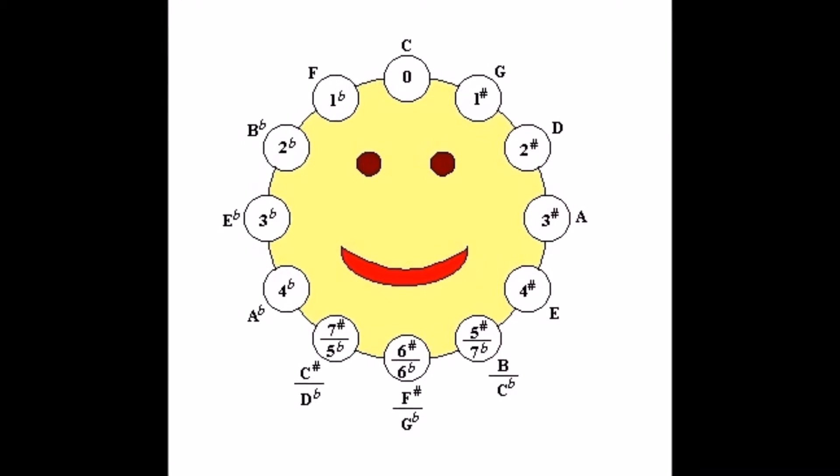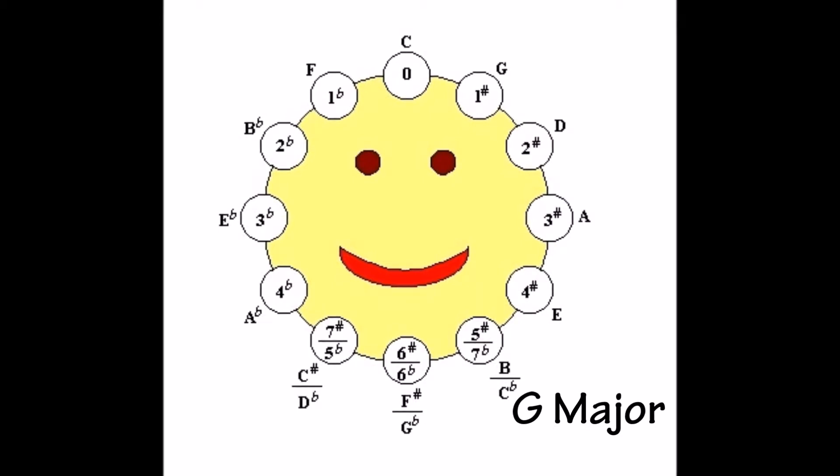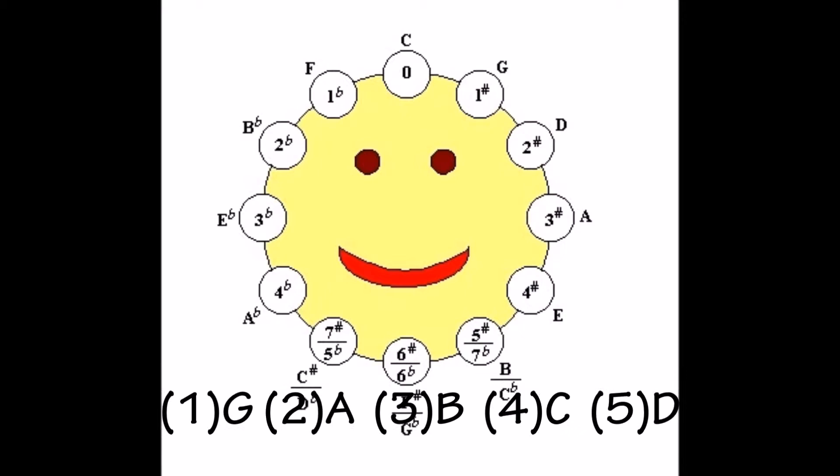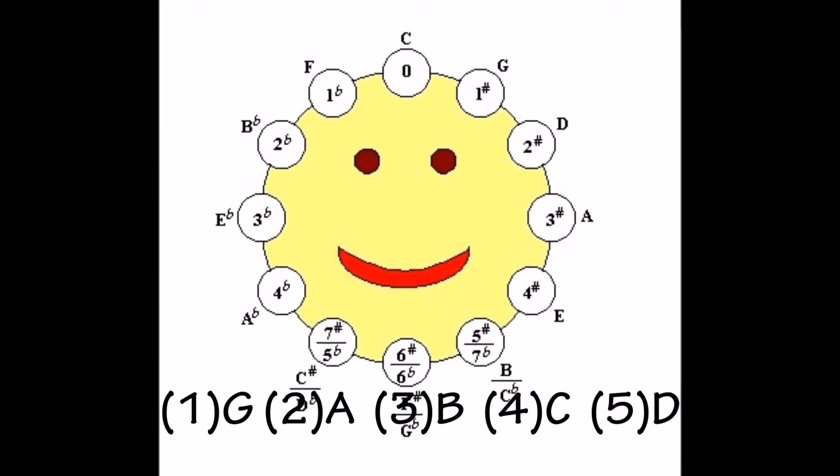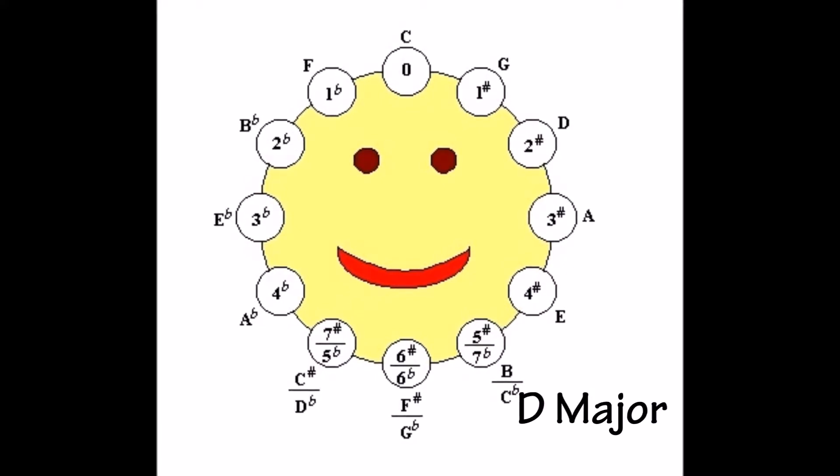We learned that if we think five notes up from the previous key we were able to determine the new key, like going from G major with one sharp, F sharp. Five up, always counting the old key as one: G, A, B, C, fifth D. D major has two sharps, F sharp and C sharp.